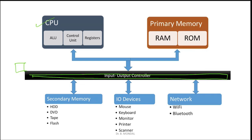It connects with the CPU, the primary memory like RAM and ROM, secondary memory like HDD and DVD tape, flash drives, IO devices like mouse, keyboard, monitor, printer, scanner, and network like Wi-Fi and Bluetooth. Everything is connected with the input-output controller.